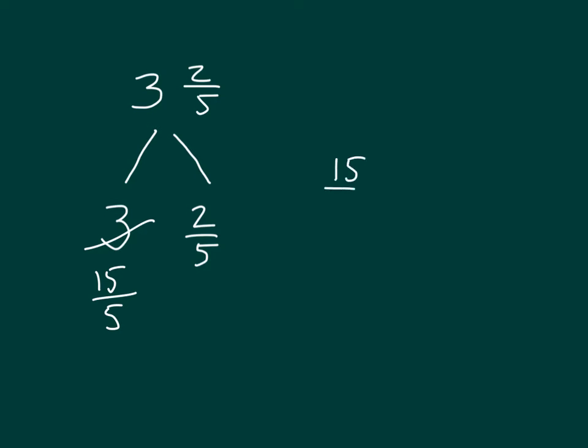Finally, 15 fifths plus 2 fifths equals 17 fifths. So, that 3 and 2 fifths is worth 17 fifths.